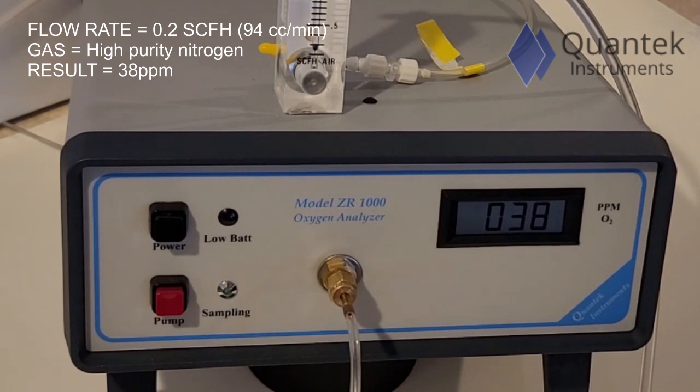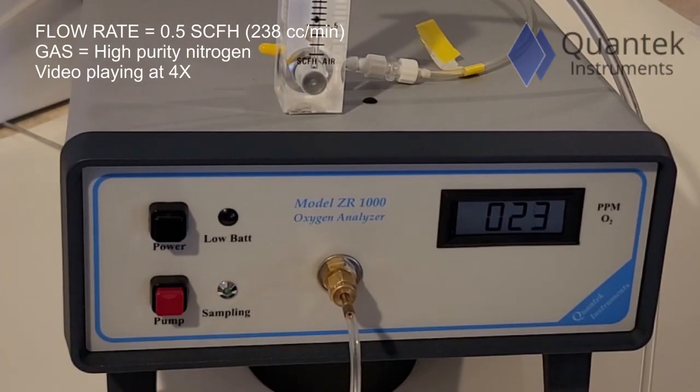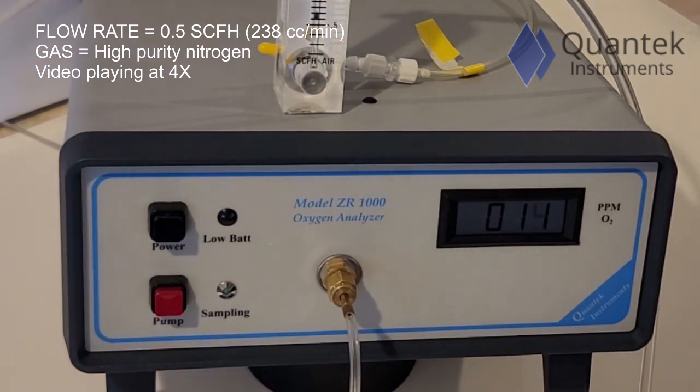Next, we'll increase the flow rate from 94 cc's per minute up to 238 cc's per minute. As you can see, the high-purity nitrogen only reaches 11 ppm.